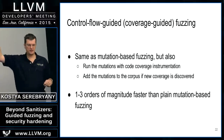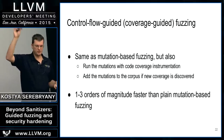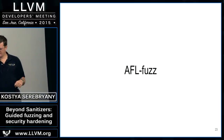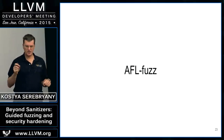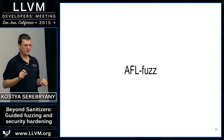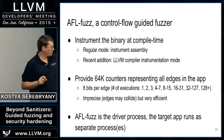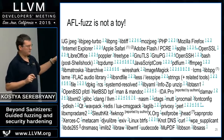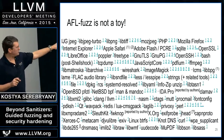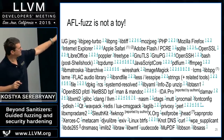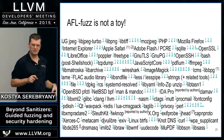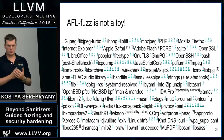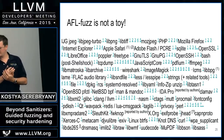AFL fuzz is a coverage-guided fuzzer which is extremely efficient, and it has so many trophies that this slide shows just a tiny portion of them. What I will be talking about today is what we call LLVM LibFuzzer.